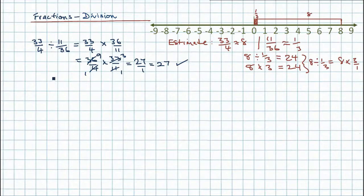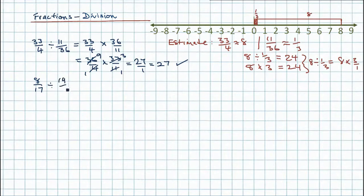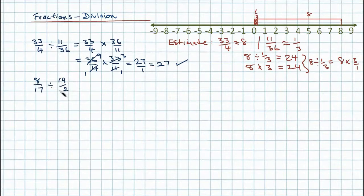Now we've got our method and we know what we're doing, let's have another go. This time I'm going to take 8 divided by 17, and our divisor is going to be 19 over 2. What I've tried to do here is create a conventional fraction divided by an improper fraction — in other words, a number less than 1 divided by a large number. But I'm going to use exactly the same method.